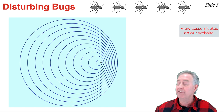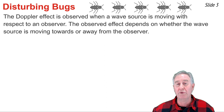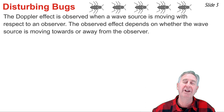The Doppler effect is observed any time we have a source of waves, such as the bug disturbing the water, that is moving with respect to some observer. The actual effect that is observed depends upon whether the bug is moving towards the observer or away from the observer.